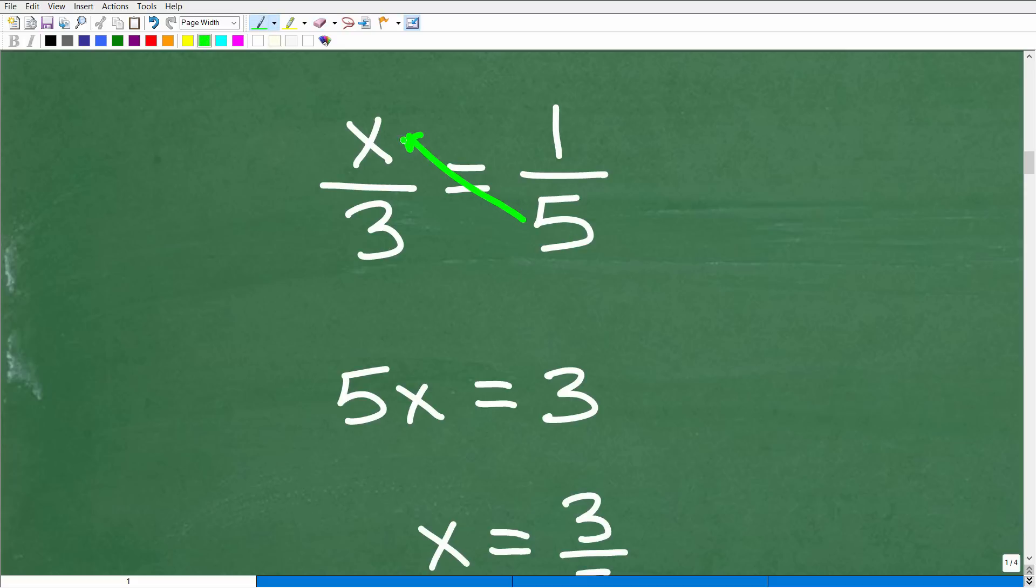So this times this, 5 times x will be equal to 3 times 1. And we can solve this nice algebraic equation in this manner. So this isn't the only way to solve this type of equation. But when you have a proportion, using a cross product is almost always the easiest way to solve. So 5 times x is 5x and 3 times 1 is 3.